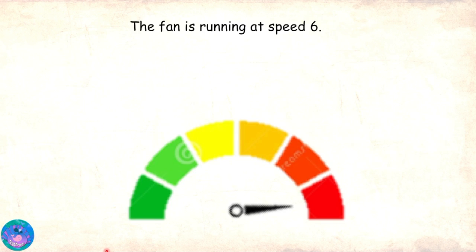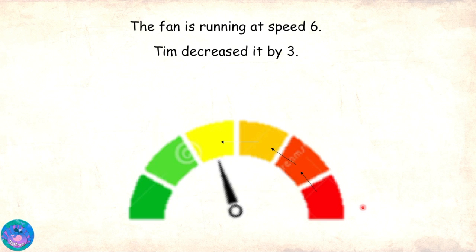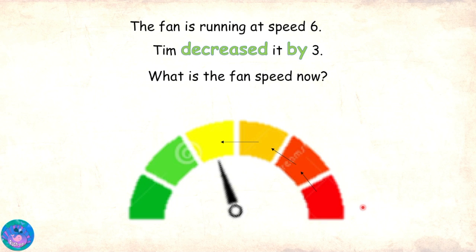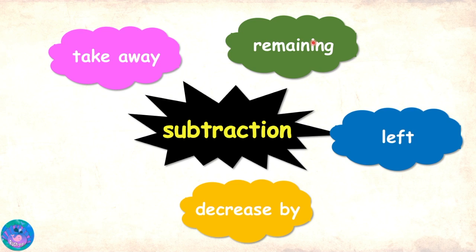Now, the fan is running at speed 6 — 1, 2, 3, 4, 5, 6. Tim decreased it by 3: 1, 2, 3. What is the fan speed now? I think the words 'decreased by' tell us that we need to take away 3 from speed 6. Excellent, Sam. So, 'decreased by' would be keywords for subtraction.